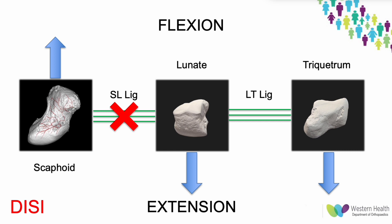This can lead to DISI — dorsal intercalated segment instability — recognized as scaphoid flexion and lunate extension with an increased scapholunate angle greater than 70 degrees on the lateral wrist x-ray. As the scaphoid falls into flexion, this can lead to scapholunate advanced collapse, also called a SLAC wrist, and progressive radioscaphoid and capitolunate osteoarthritis.